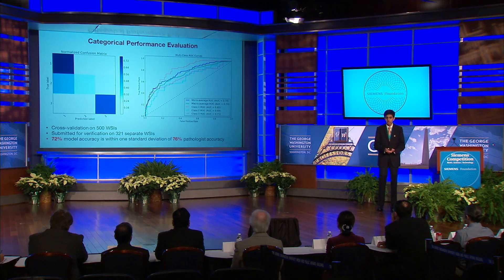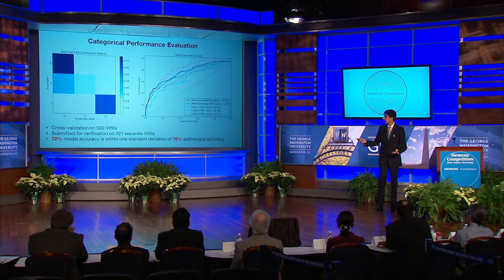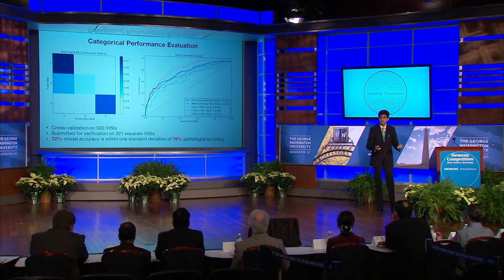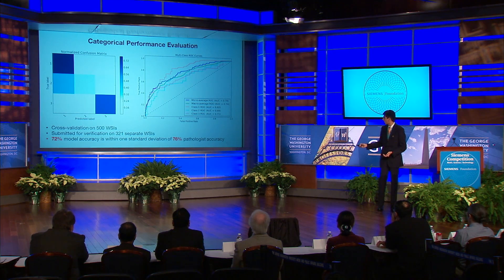To evaluate my model on a categorical and molecular scale, I use cross-validation on 500 distinct whole slide images. My normalized confusion matrix for categorical prediction indicates my model's strong predictive potential for classes 1 and 3, with class 2 being an intermediate class predicted with less confidence. Furthermore, my receiver operating characteristic curves add additional context, with a micro-average AUROC of 0.78 across three classes defining current state-of-the-art. My model's accuracy of 72% is within one standard deviation of current pathologist accuracies of 76%, indicating clinical applicability.